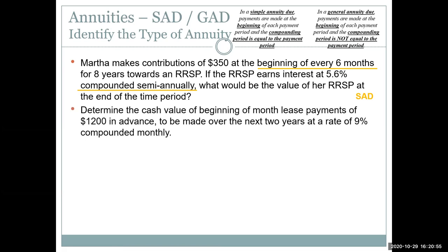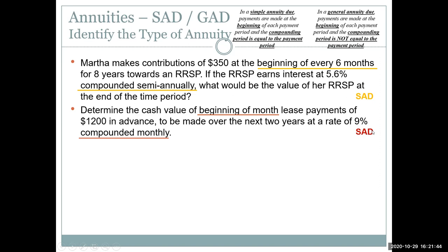Determine the cash value of beginning-of-month lease payments of $1,200 in advance, to be made over the next two years at a rate of 9% compounded monthly. 'Cash value' means we're finding the present value. Both 'beginning of month' and 'in advance' indicate payments are at the start of the period. We're making regular monthly payments with monthly compounding — those match — so this is a simple annuity due.